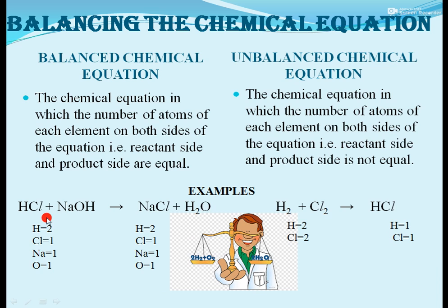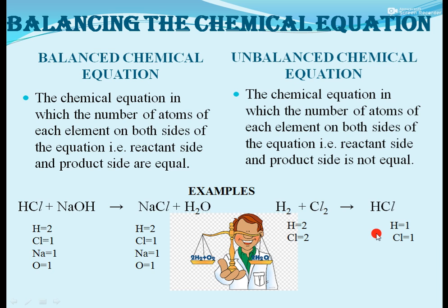For example, hydrochloric acid reacts with sodium hydroxide to form sodium chloride and water — all atoms are equal on both sides, so this equation is balanced. But when H2 reacts with Cl2 to form HCl, there are two atoms of hydrogen and chlorine on the reactant side but only one atom of each on the product side, making it an unbalanced equation.